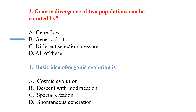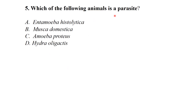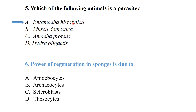The idea of organic evolution is descent with modification. Which of the following animals is a parasite? — It is Entamoeba histolytica, that is the cause of amoebiasis. Power of regeneration in sponges is due to the archaeocytes.